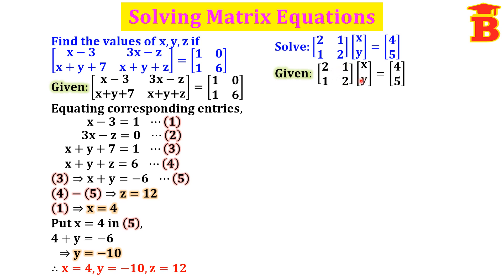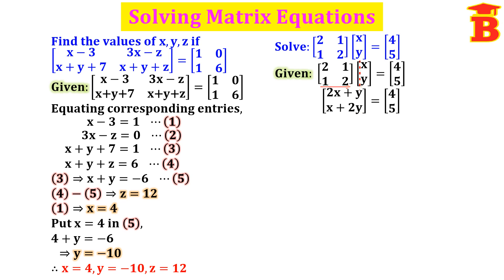On the left side, we have to multiply these two matrices using the row by column method. Taking the first row multiplied by the column: 2x plus 1 times y equals 2x plus y. Taking the second row multiplied by the column: 1x plus 2y equals x plus 2y. This equals the right-hand side matrix [4; 5].